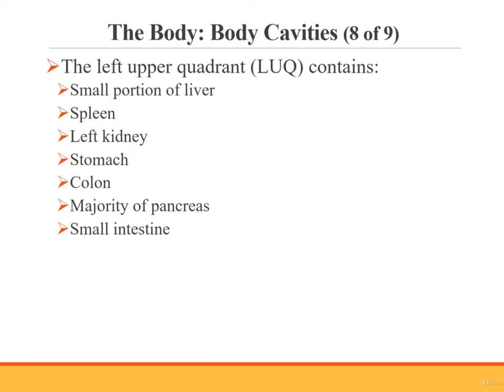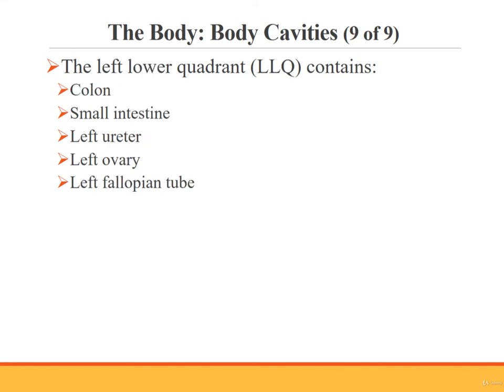The left upper quadrant (LUQ) contains a small portion of the liver, the spleen, the left kidney, the stomach, the colon, the majority of the pancreas, and the small intestine. The left lower quadrant (LLQ) contains the colon, the small intestine, and the left ureter. In females, the LLQ also contains the left ovary and the left fallopian tube.